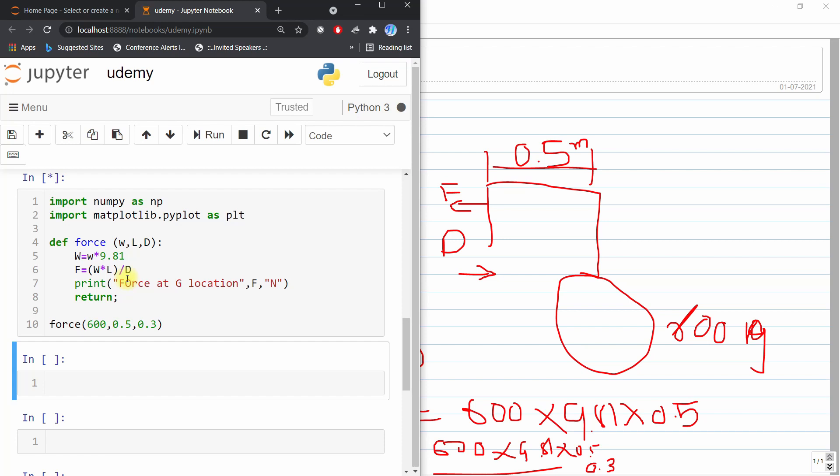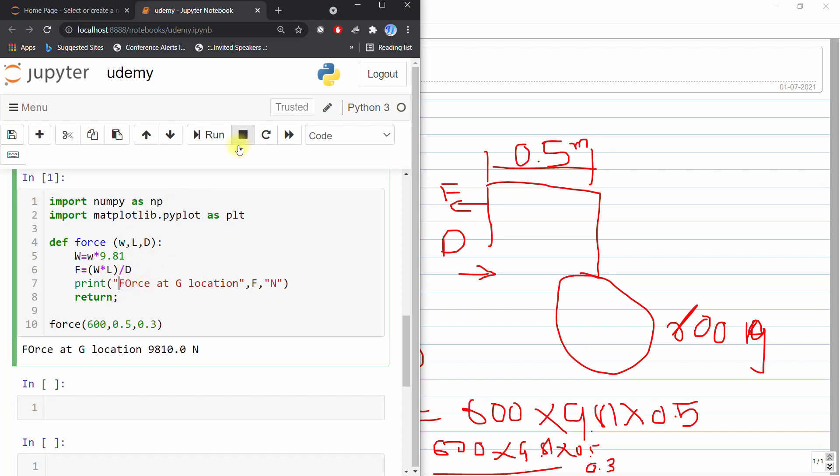Force F is equal to 0.4... Sorry, first this is because of my first run. It will take some time actually but afterward it is OK. So force at G location is 9810.